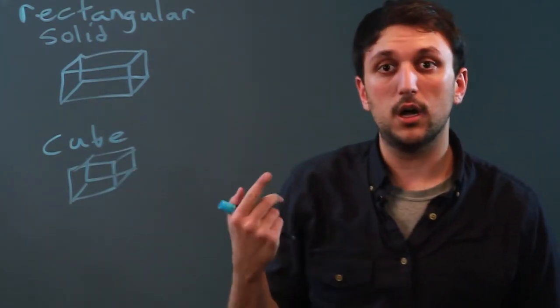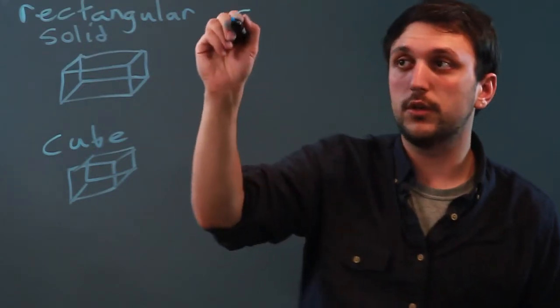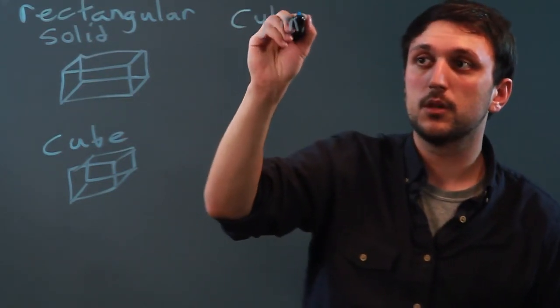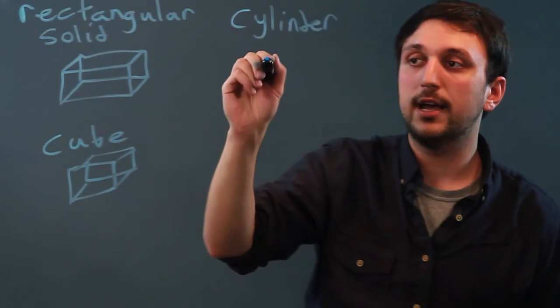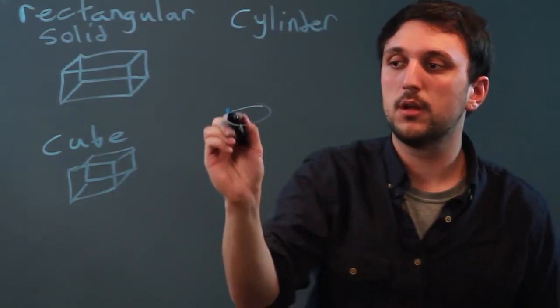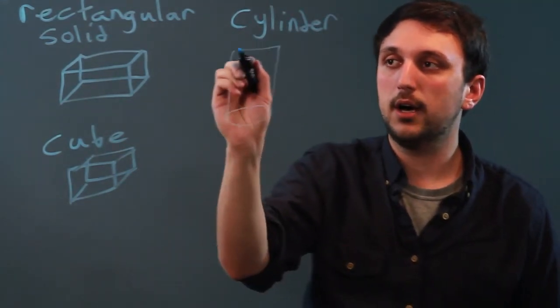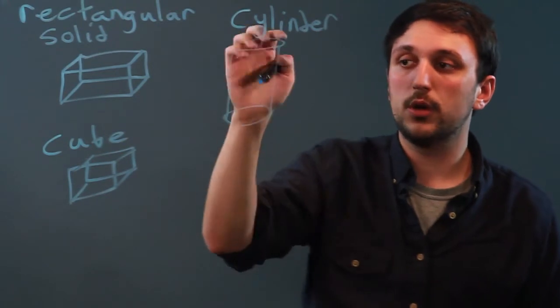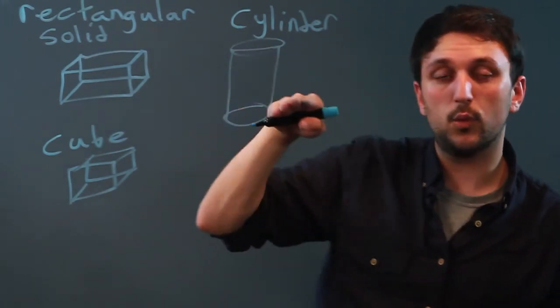So other kinds of three-dimensional shapes are cylinders, which has a circular base and a height. So you're basically stacking circles one on top of the other.